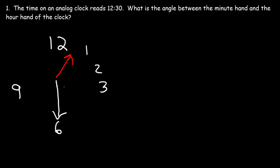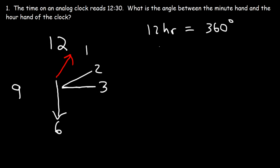First, it's helpful to know the measure of one hour. So let's focus on the 3. What's the angle between the 2 and the 3? Notice that it takes 12 hours for the hour hand to make a complete revolution. So 12 hours correlates to 360 degrees, because that's the entire circle. So one hour is going to be 360 divided by 12. So every hour represents an angle of 30 degrees.